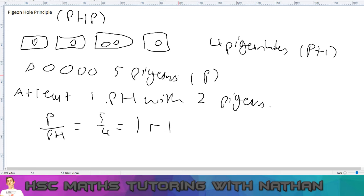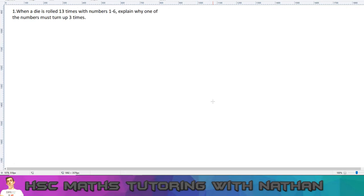So in context it's the same—this principle sounds straightforward, but applying it to real-life problems is a lot more complicated. So I've got 2 quick problems, 1 simple and 1 more complicated. So let's do this here. When a die is rolled 13 times with numbers 1 to 6, explain why 1 of the numbers must turn up 3 times.